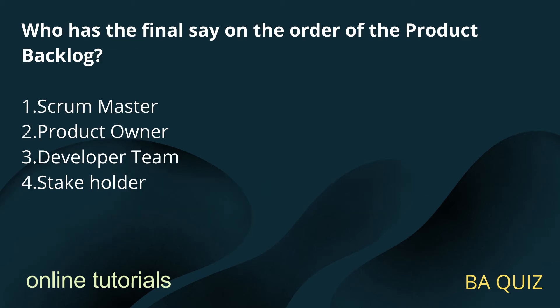Question number 3: Who has the final say on the order of the product backlog? Option 1: Scrum master. Option 2: Product owner. Option 3: Developer team. Option 4: Stakeholder.